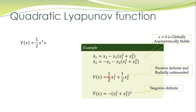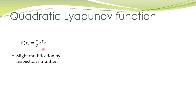Why do we include the factor 1/2? Because it further simplifies the derivative. If we take the derivative of the first term, it will be 2x1 times x1 dot; the factor of 1/2 cancels that extra 2. You can also take the simple form x^T x without the 1/2. And in some cases, if this quadratic Lyapunov function does not work, we can modify it by using our intuition and inspection of the terms.